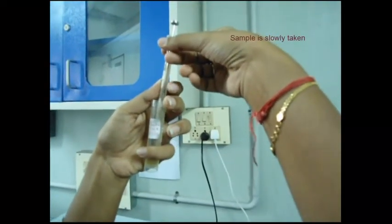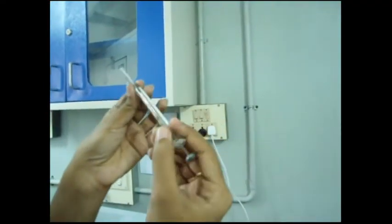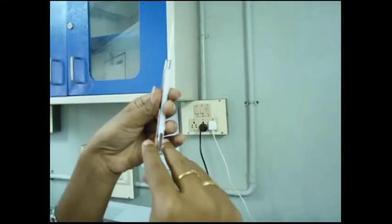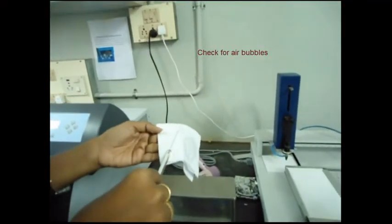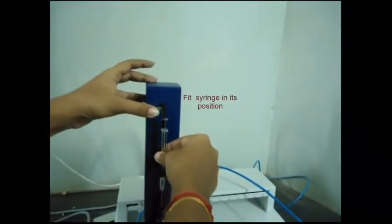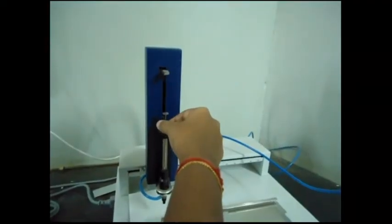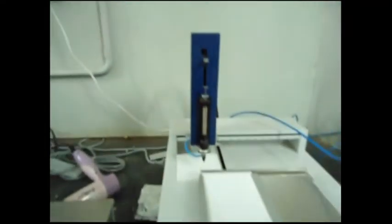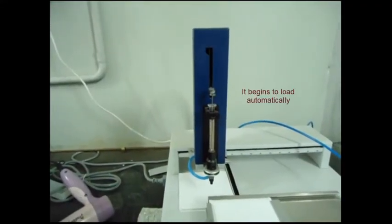Samples are carefully taken with a special syringe. Check it for air bubbles. Wipe it with tissue paper, then fit the syringe in its position in the sample injector. It automatically allows the syringe to load the sample.